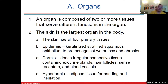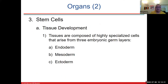An organ is composed of two or more tissues that serve different functions. The skin is the largest organ in the body and has three layers: epidermis, dermis, and hypodermis.